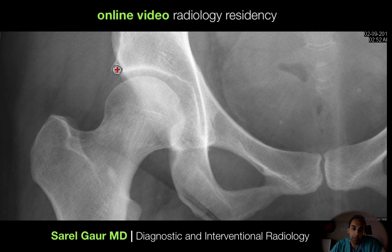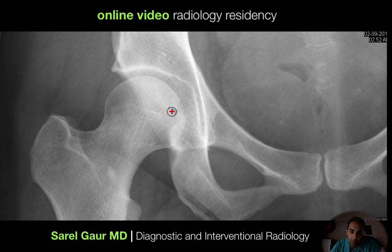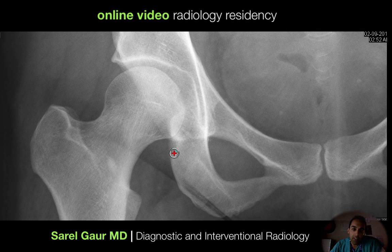I also want to point out the acetabulum here. You can see two lines, which represent the anterior and posterior wall. The anterior acetabulum is continuous with the superior pubic ramus — I can track that back and see a faint line representing the anterior wall of the acetabulum. The posterior wall is the line continuous with the ischium. In a typical hip dislocation, the femoral head dislocates posteriorly and cracks the posterior wall, so I'm looking for traumatic injury there.